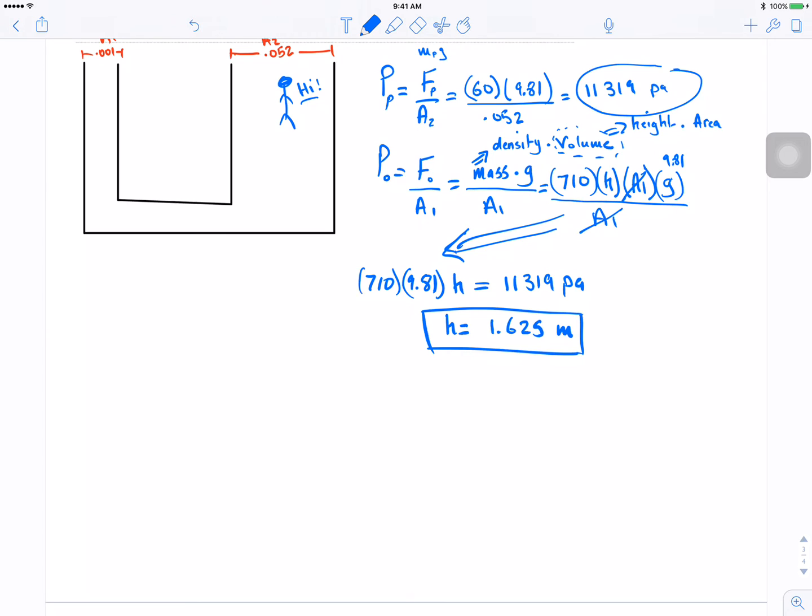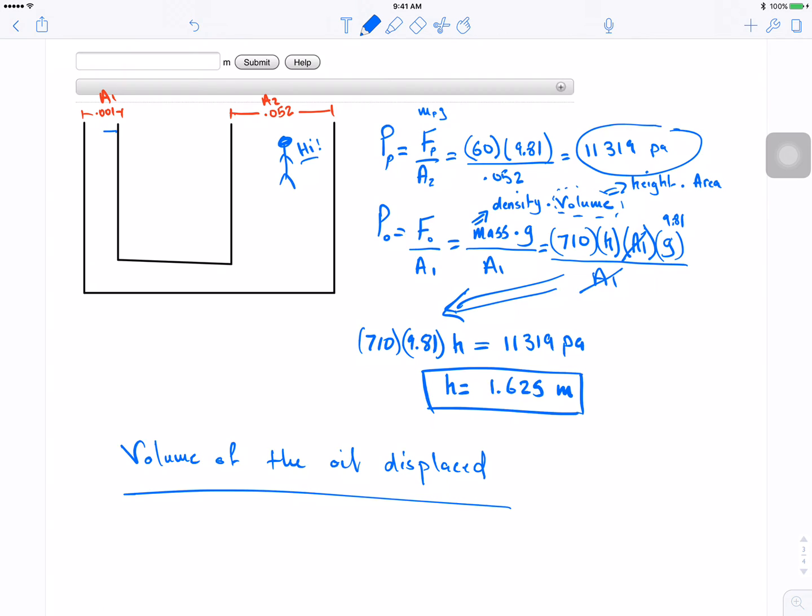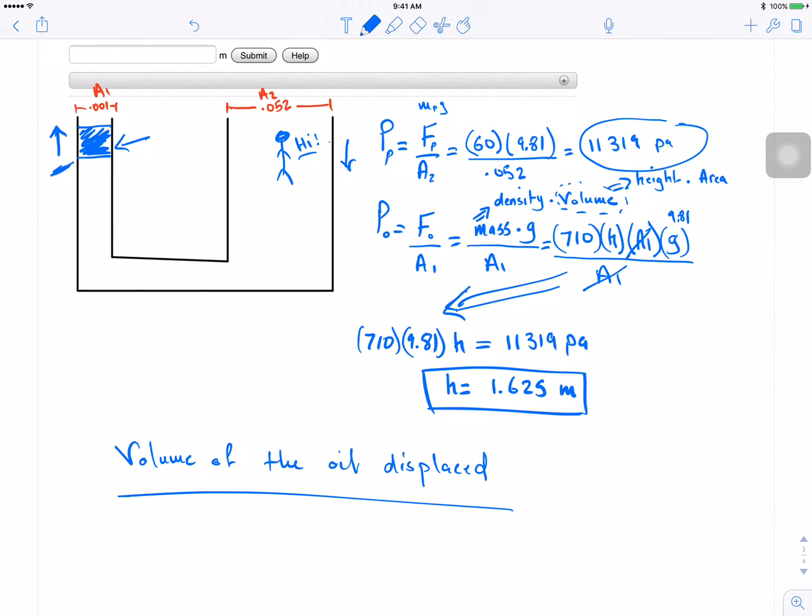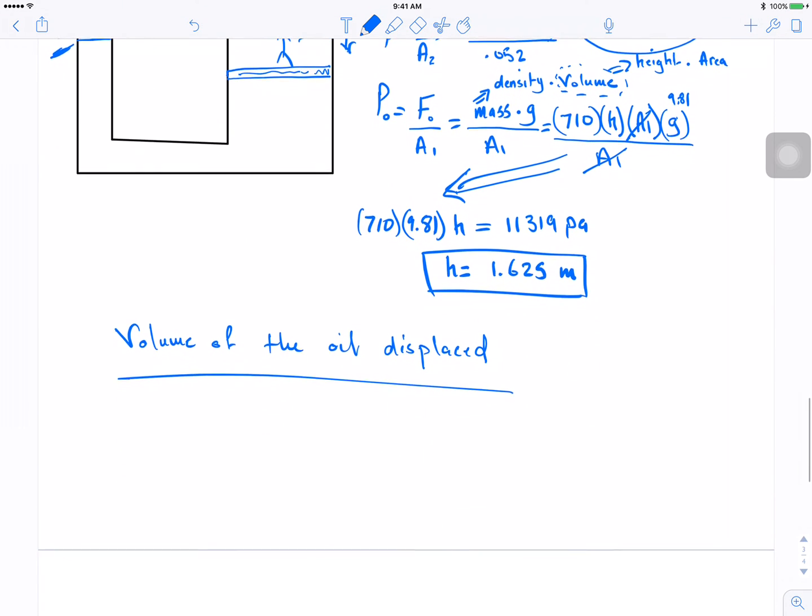So volume of the oil displaced from this guy in here, so like let's say this kind of oil got displaced. So this oil went up. How much it went down is the same volume. The same volume from here is going to go down from here. So the volume of this is going to equal the volume of that.